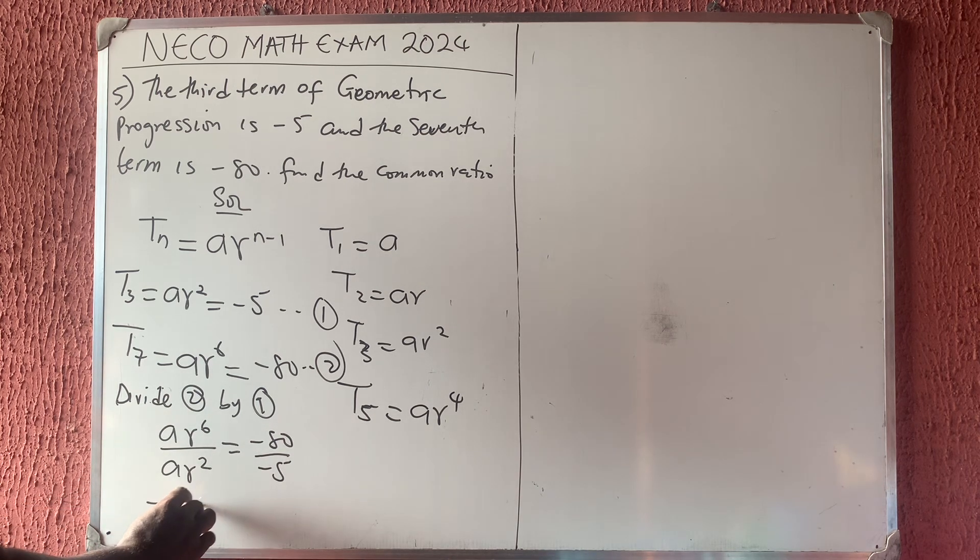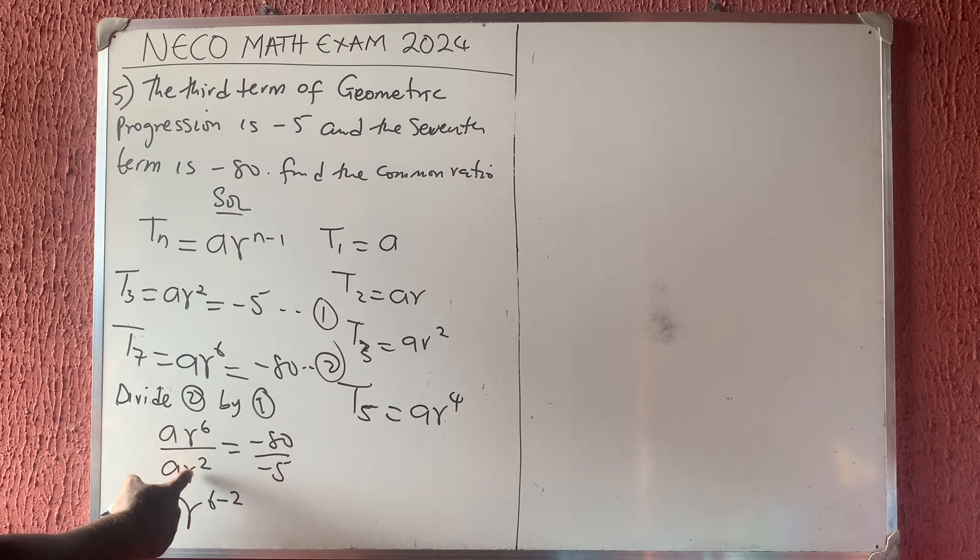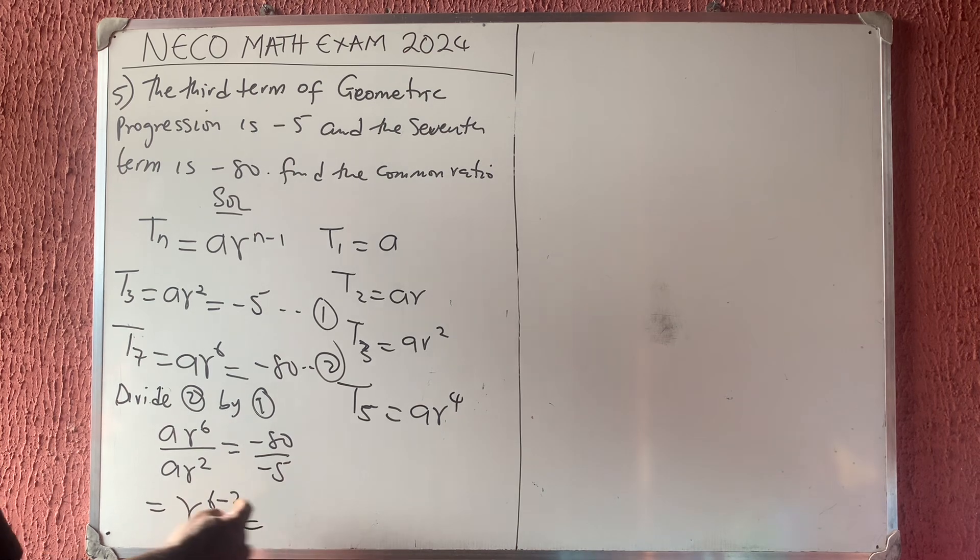A divided by A is 1. So according to indices, this is going to be R raised to the power of 6 minus 2. According to indices, if the bases are the same, we can subtract the power.